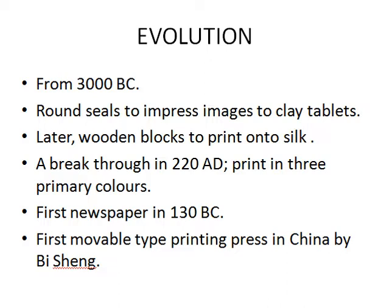There is a breakthrough in 220 AD — there was printing in three primary colors. And in the 11th century, a Chinese man called Bisheng found out ways to print on papers, and he discovered the first movable type printing press in China. Though we cannot call it a perfect newspaper, it is said that there was something called a newspaper in 130 BC. It was a single piece, as there was no means to print in bulk.